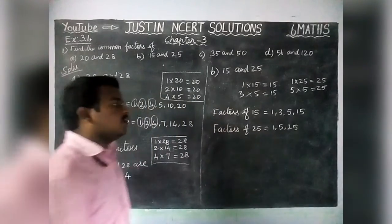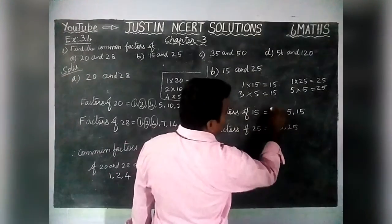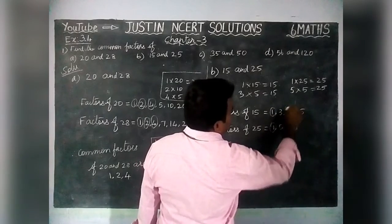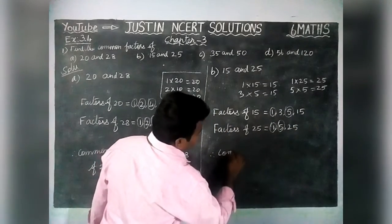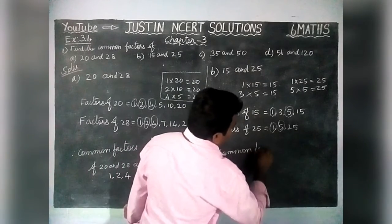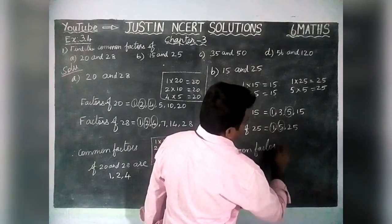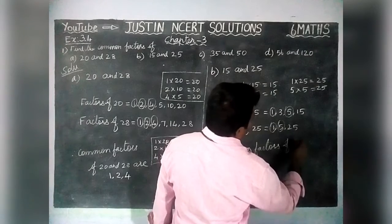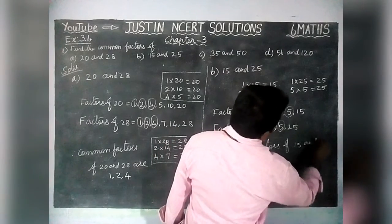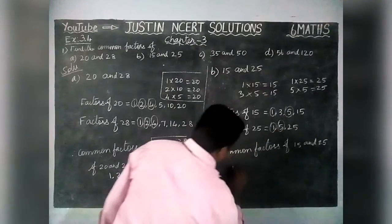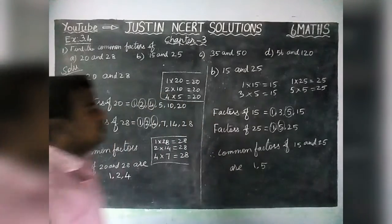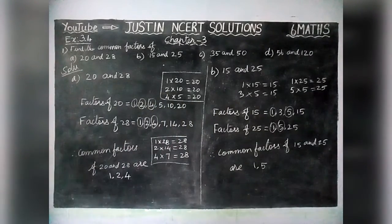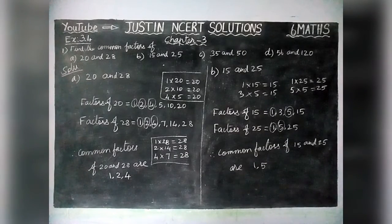In this, what are the common factors we have? 1 is a common factor and 5 is a common factor. Therefore, the common factors of 15 and 25 are 1 and 5. First we found all the factors of 15, after that all the factors of 25, then we found all the common factors.